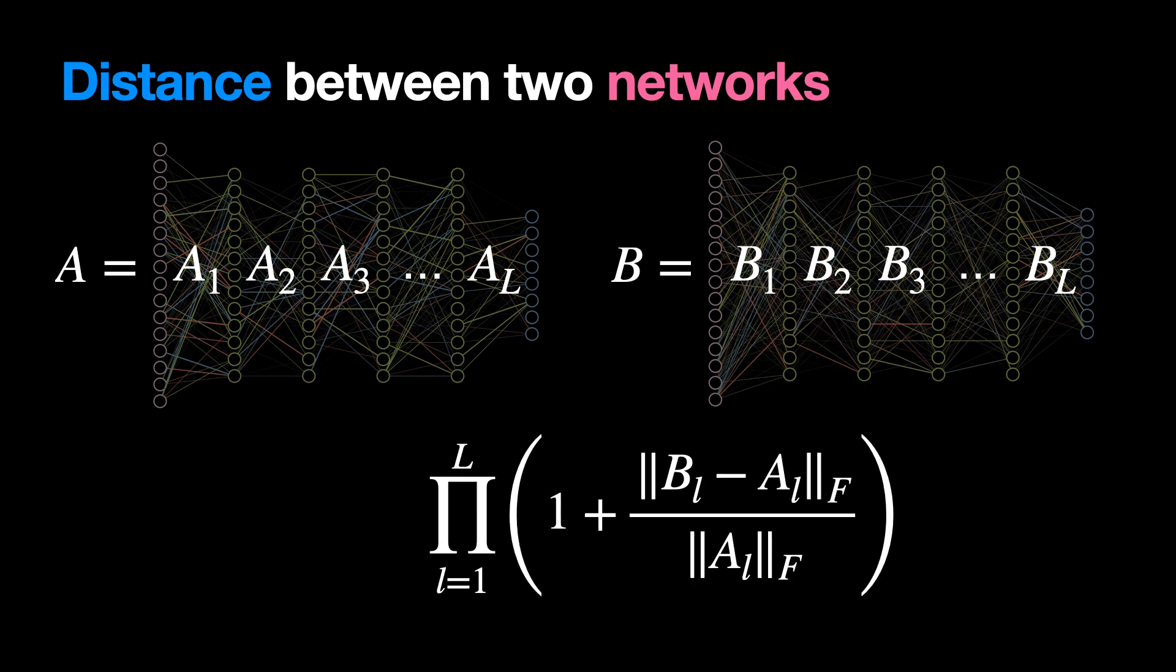We can take the product over layers, subtract 1, and define this to be the distance between two networks. Call it deep relative trust.